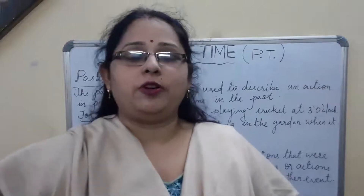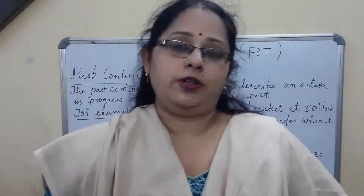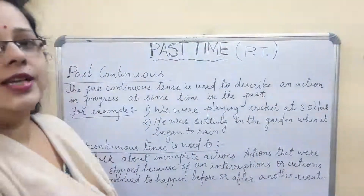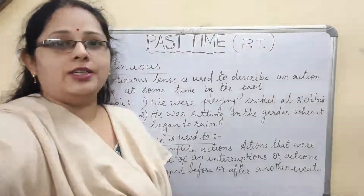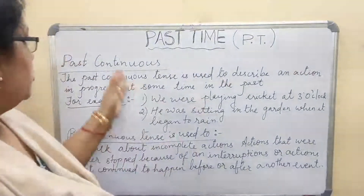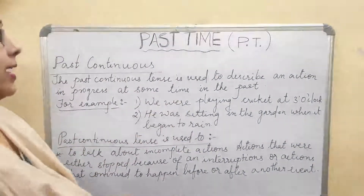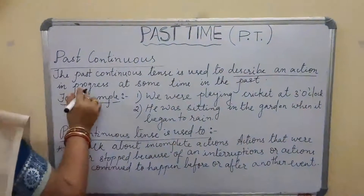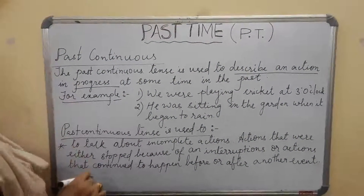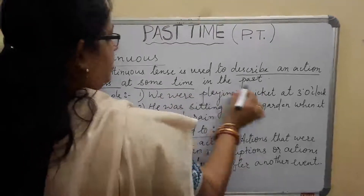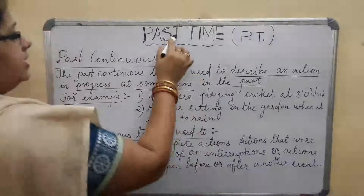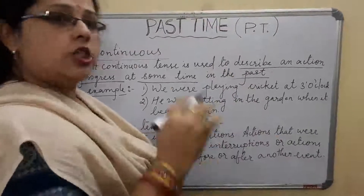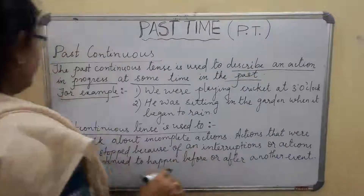Welcome back to this new part on the Simple Past Tense. Today we are going to discuss the Past Continuous Tense. Past continuous tense is used to describe an action in progress — that means continuing — at some time in the past. Since we are discussing the past, there was a continuation happening some time ago.